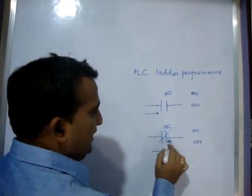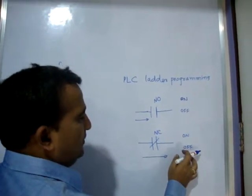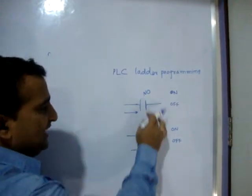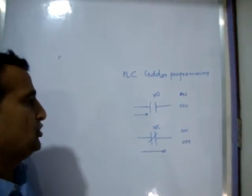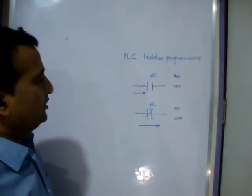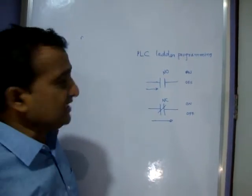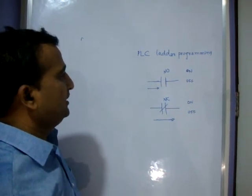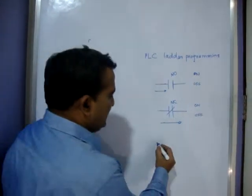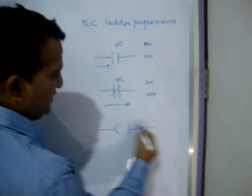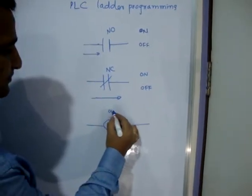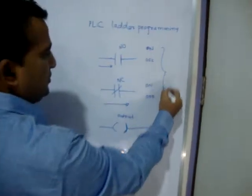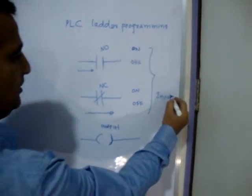When the current is flowing it is on — NC is exactly the reverse of the NO switch. We will write a small program on PLC ladder using NO, NC, and the output symbol. This is called the output symbol in a PLC ladder program. These elements on the left are called inputs.